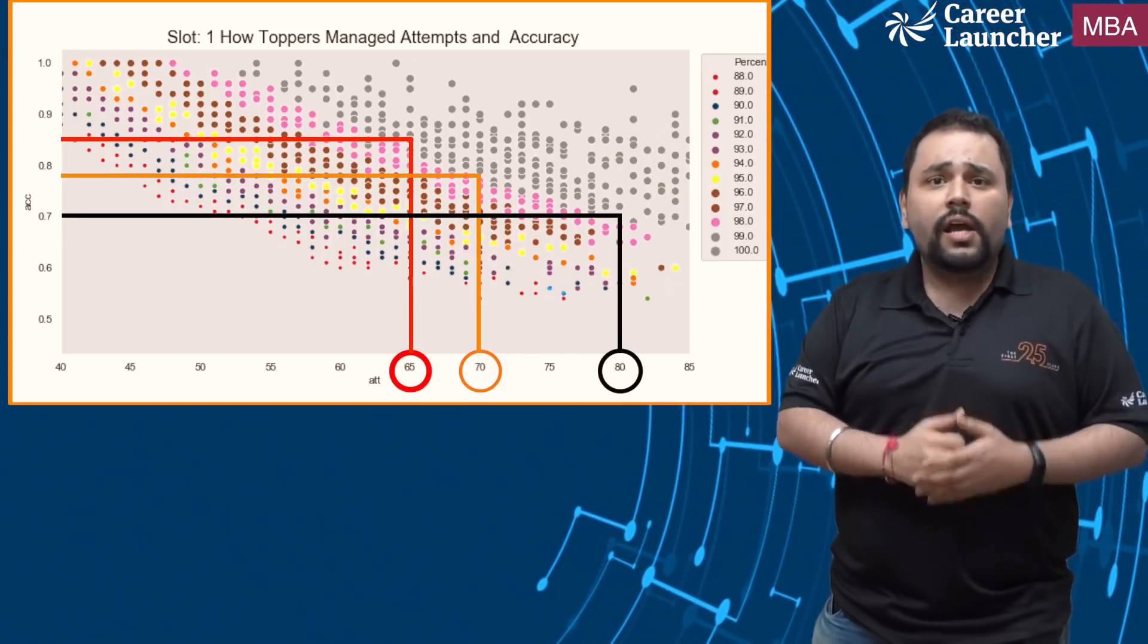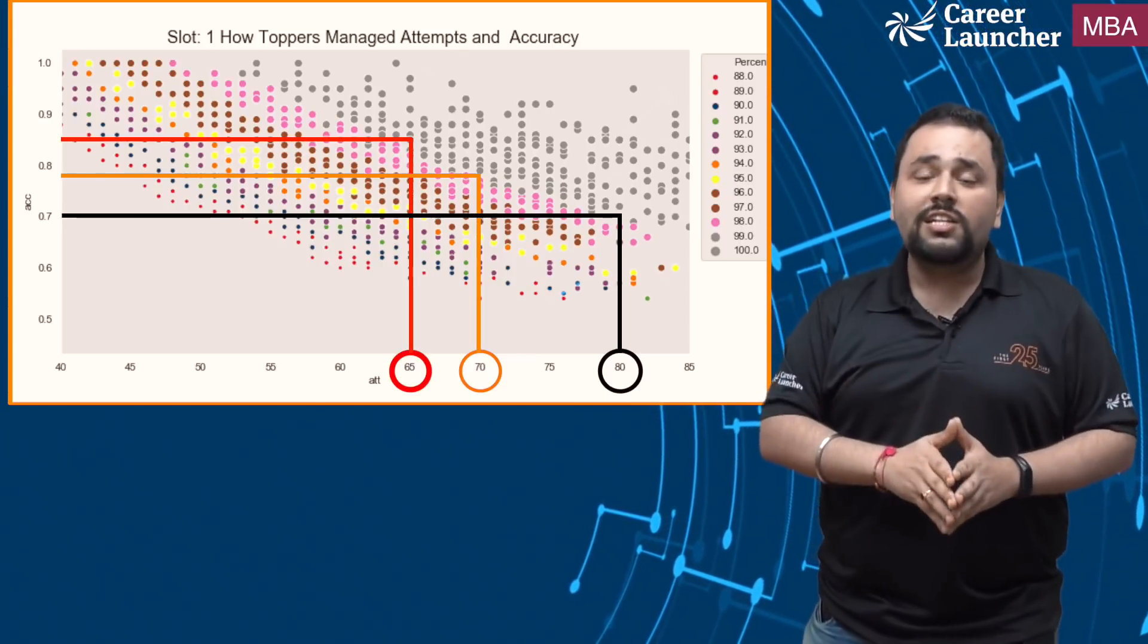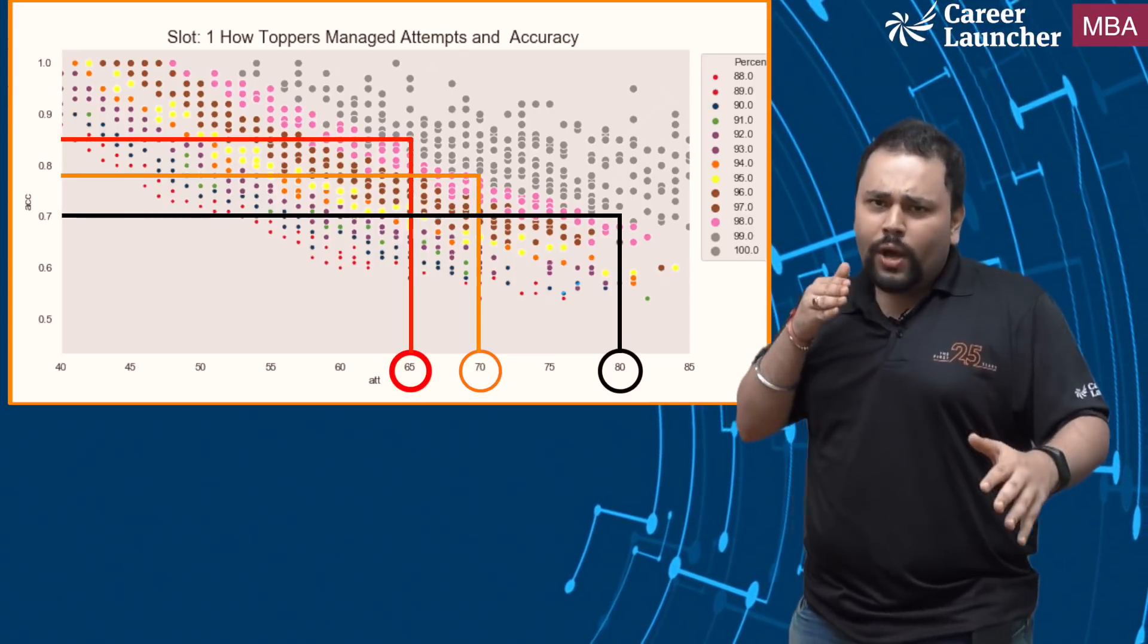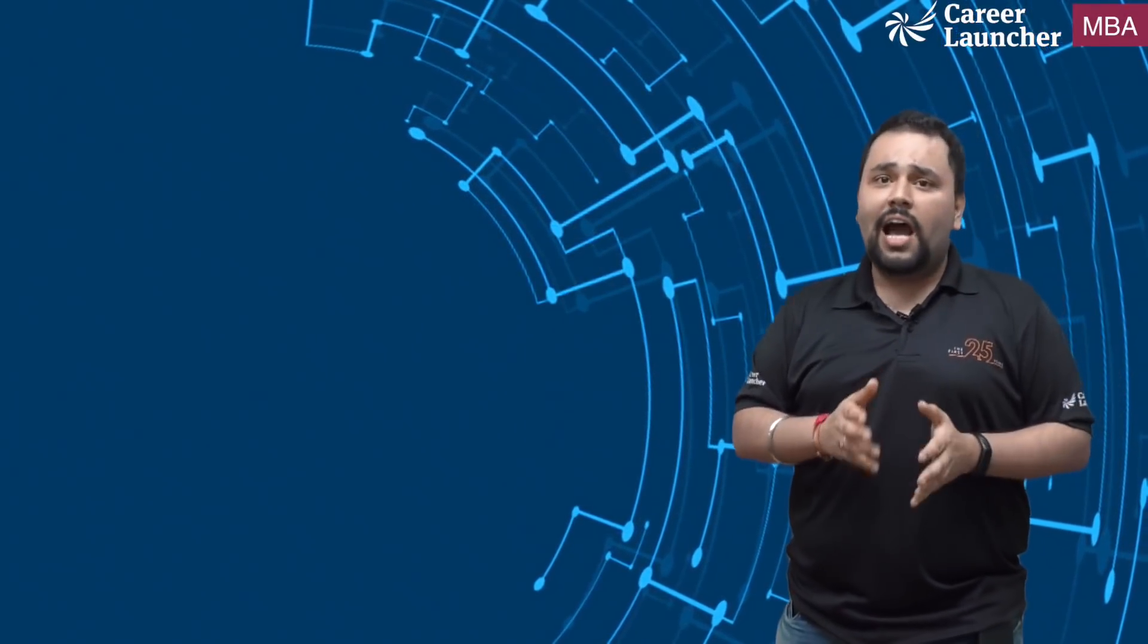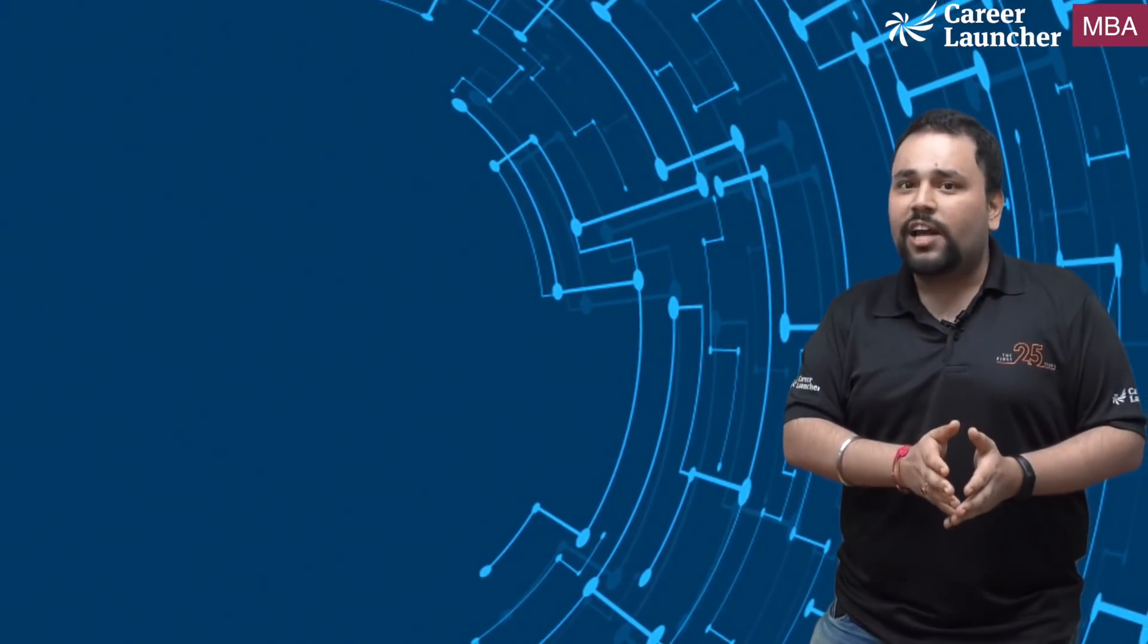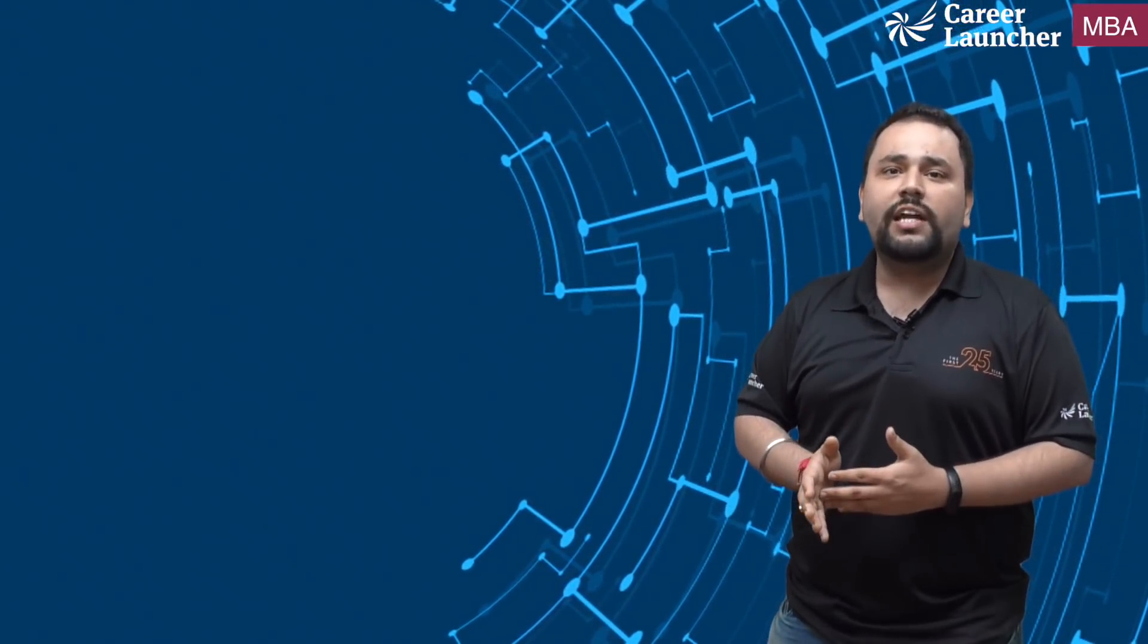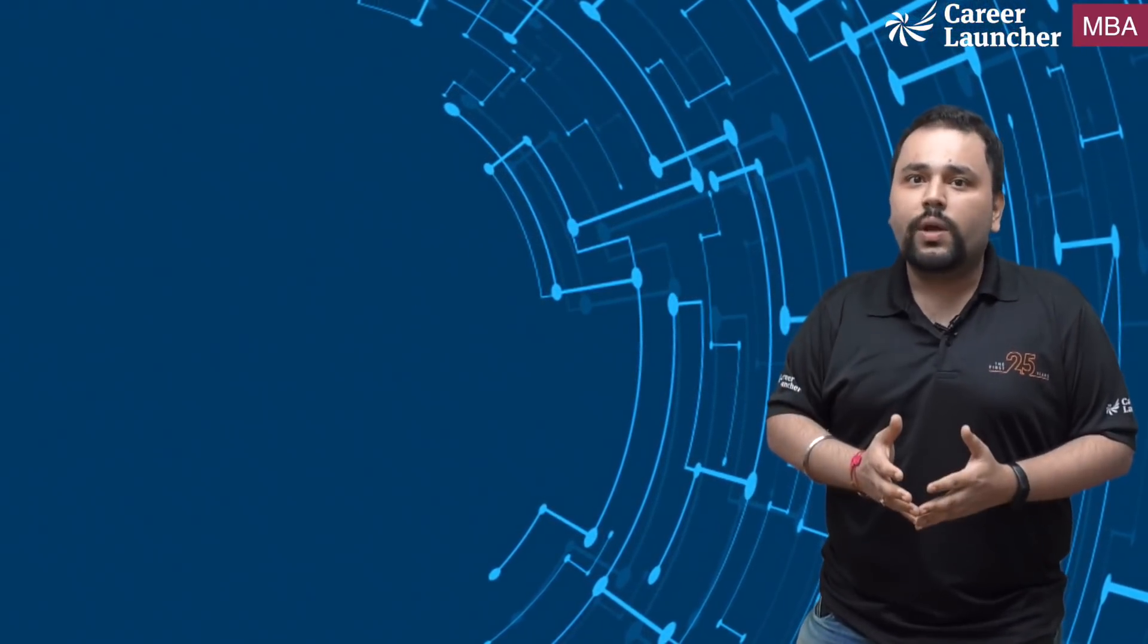What does that mean? It means if I am attempting lesser number of questions that is not a hindrance as long as I am sure of the fact that I am edging towards a hundred percent accuracy. Because if you keep in mind last year a 99 percentile was at 153. So if I ended up attempting 65 questions then I should have ideally at 85 percent accuracy gotten close to 54 to 55 questions correct which is exactly what that 153 would have symbolized. So this kind of makes sense as well.